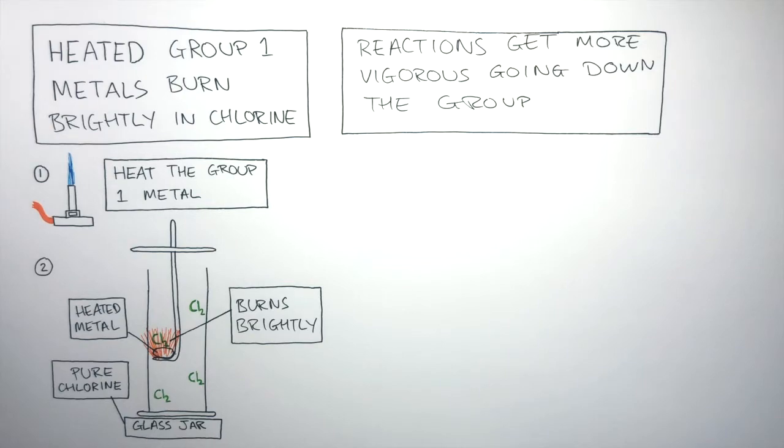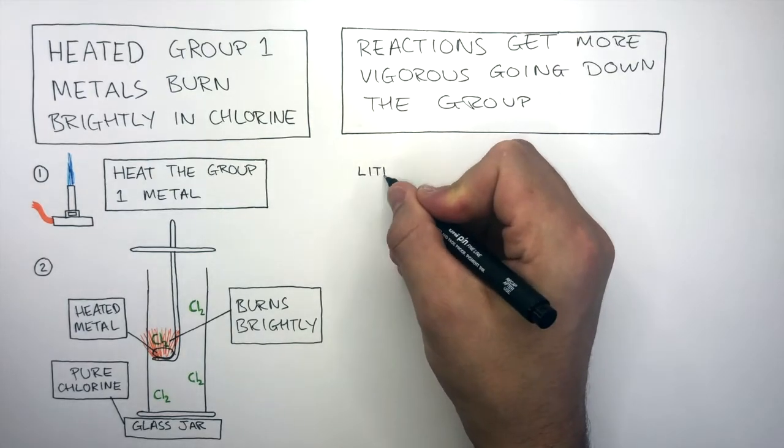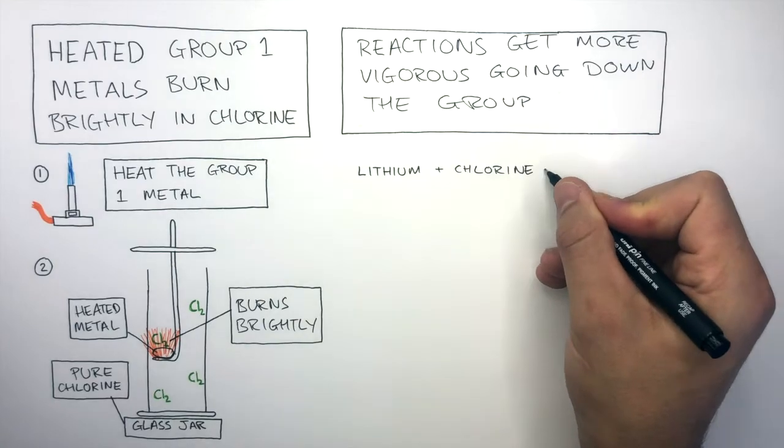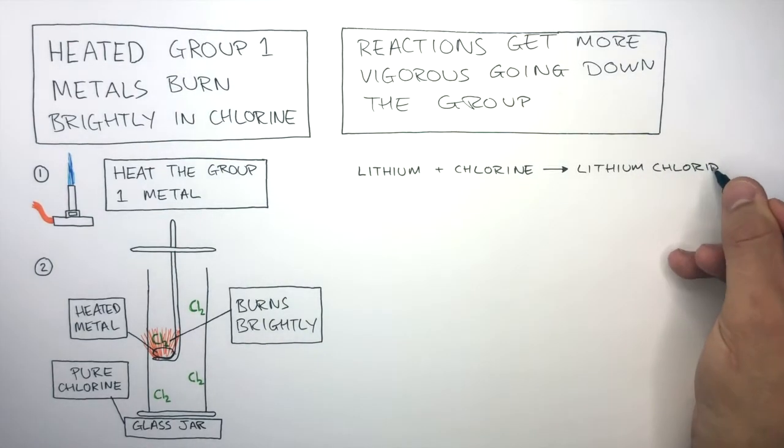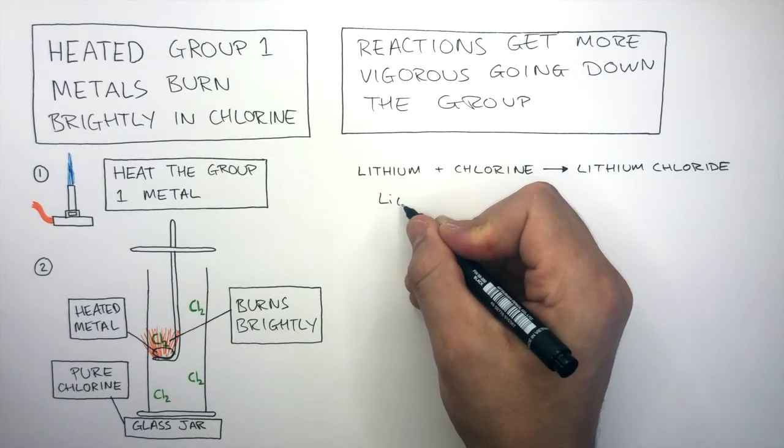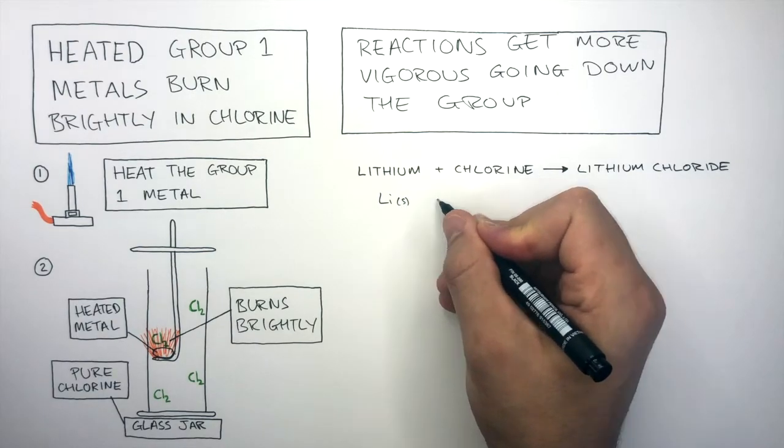Let's now go through the word and balance symbol equations of when Group 1 metals react with chlorine. Lithium reacts with chlorine to form lithium chloride. The symbol equation is Li, S in brackets because it's a solid, plus Cl2.